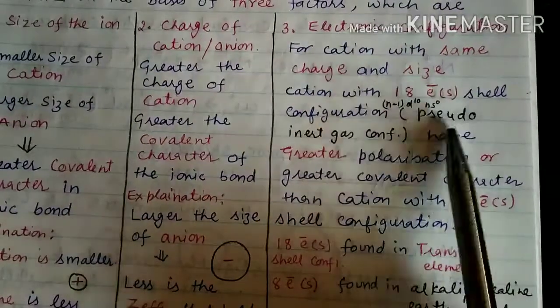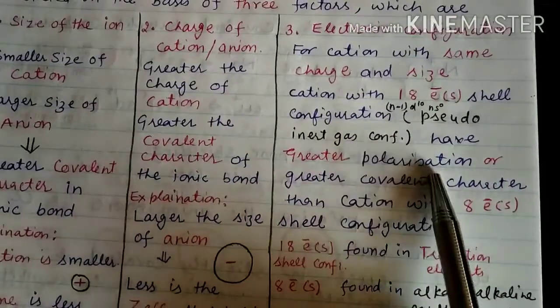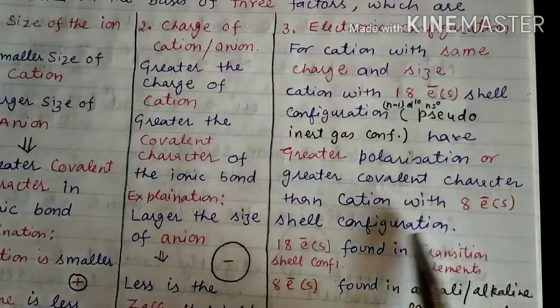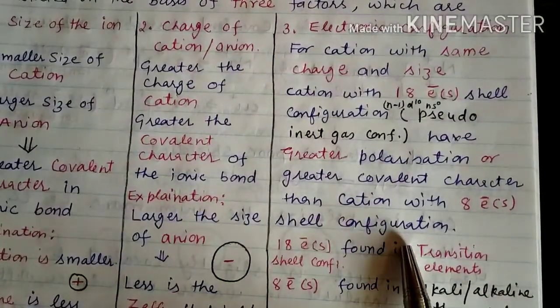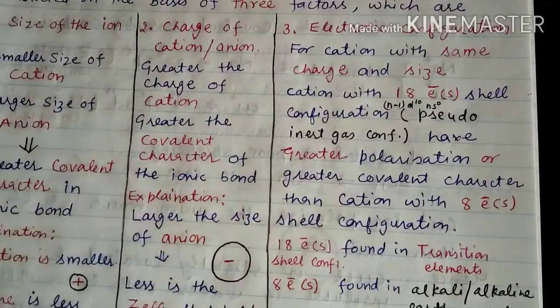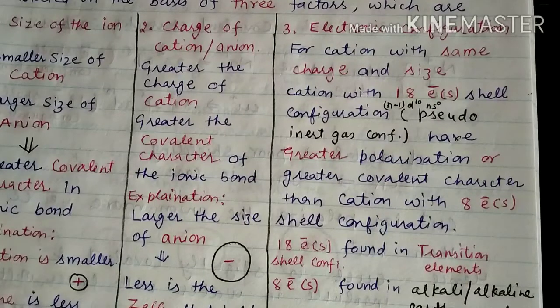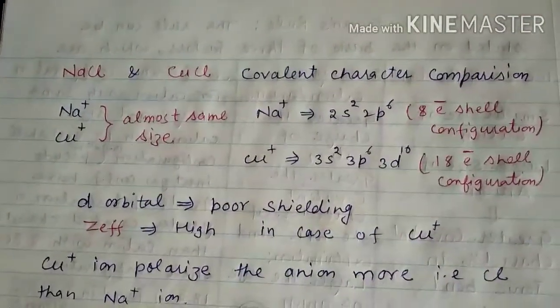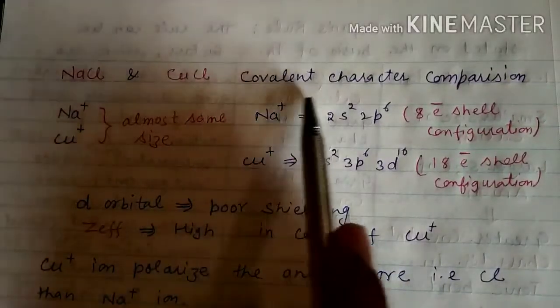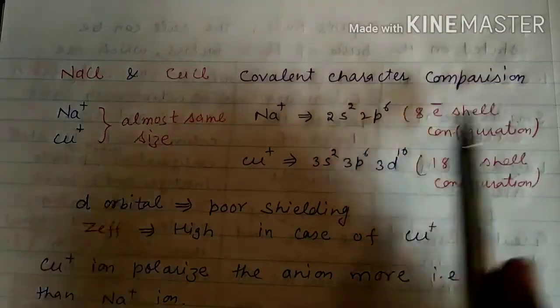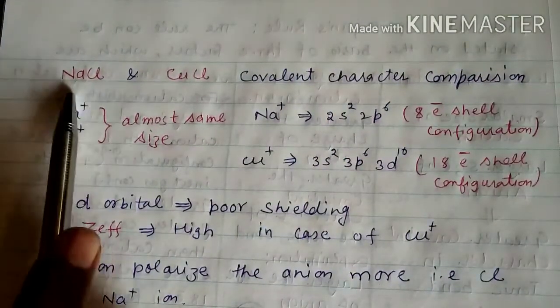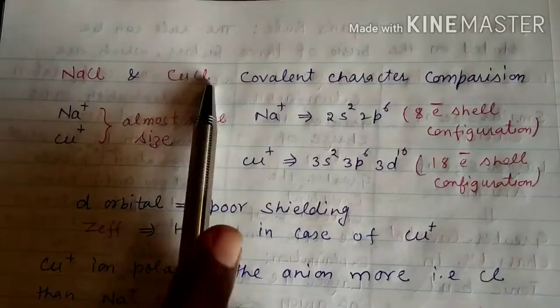The third factor is electronic configuration. For cations with the same charge and size, a cation with 18-electron shell configuration (pseudo inert gas configuration) has greater polarizing power and greater covalent character than a cation with an 8-electron shell configuration. To understand this, let us compare NaCl and CuCl for covalent character. In NaCl the cation is Na⁺, and in CuCl the cation is Cu⁺.